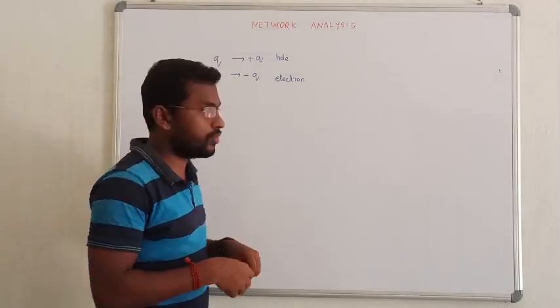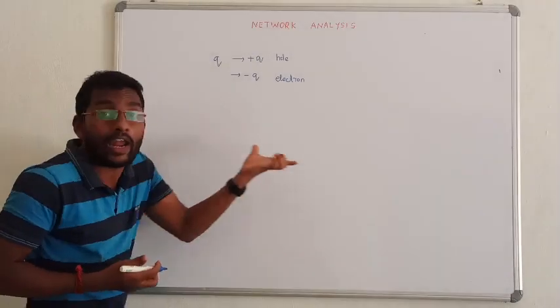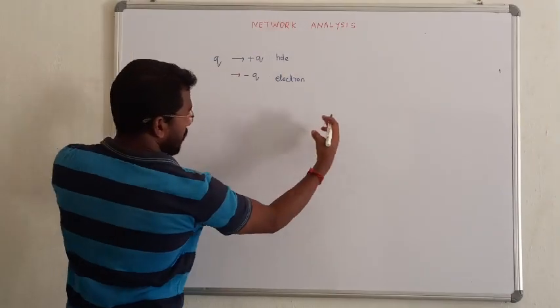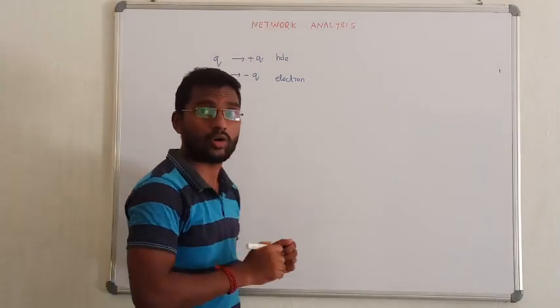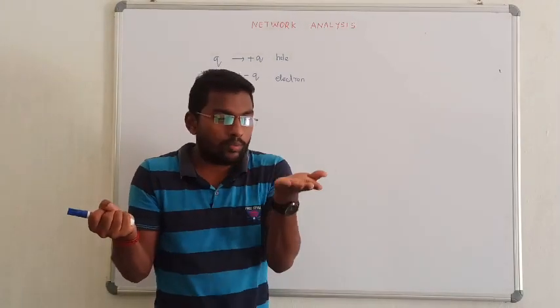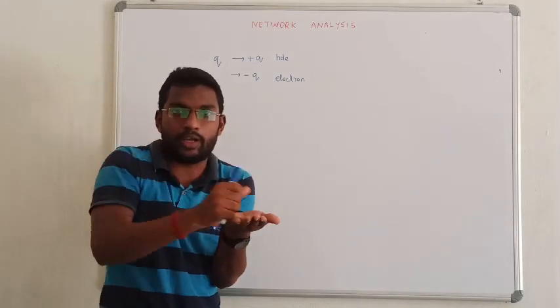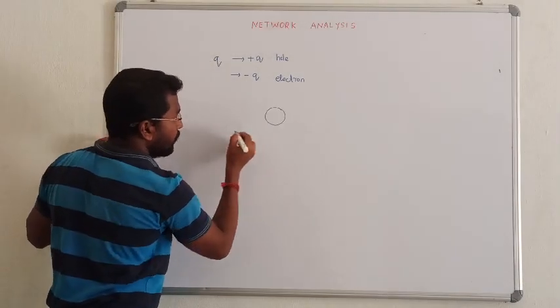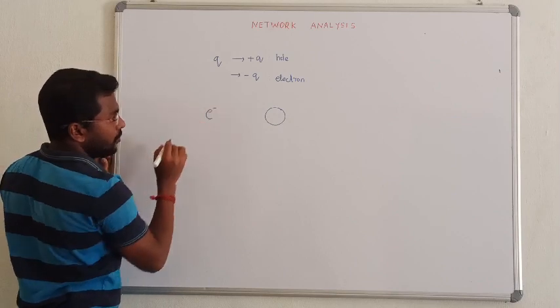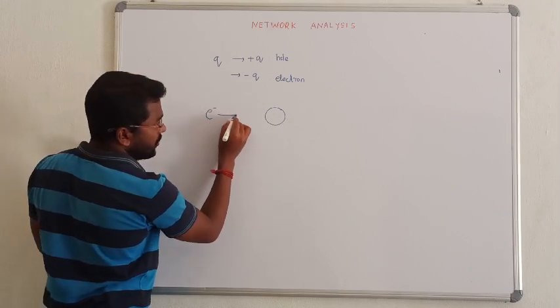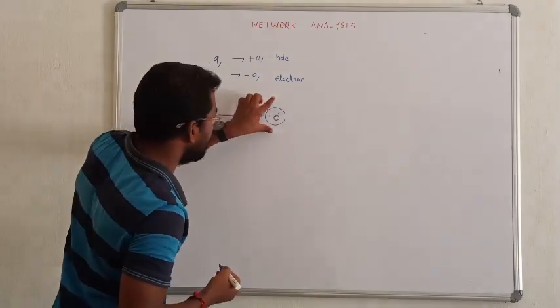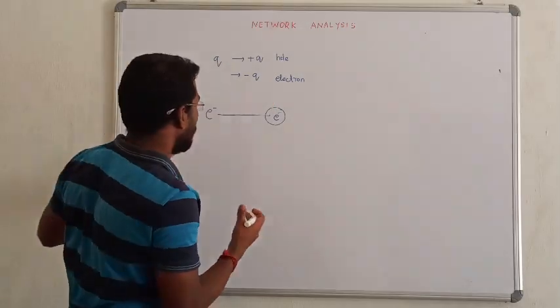So we need to know about the flow of electrons. What does that mean? If we have negative charge or positive charge, the electron will attract the positive charge. The positive charge will attract the hole. So let me take an example. The positive charge will attract the hole. Here we have an electron. If we have an electron, it will attract the positive charge.